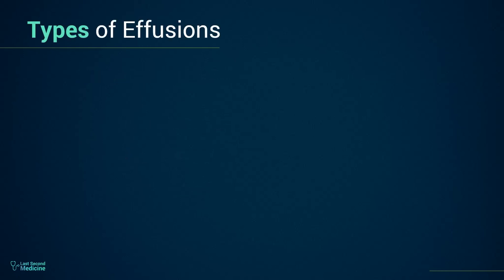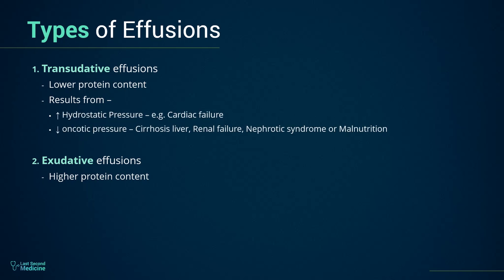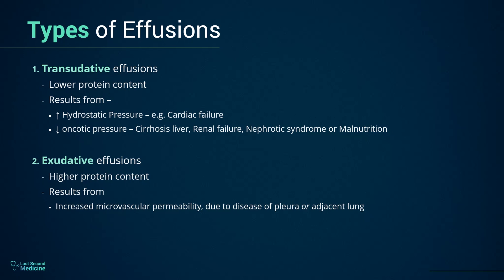Types of pleural fluids. Pleural fluid is either transudate or exudate. The difference in both is the higher protein content in the latter, and we will talk about it in detail when discussing investigations. Transudative fluid results from either increased hydrostatic pressure, as seen in cardiac failure, or from decreased oncotic pressure as seen in liver or renal failure, nephrotic syndrome, or malnutrition. Exudative pleural effusion results from inflammation and resultant increased microvascular permeability, due to disease of the pleura or injury in the adjacent lung.